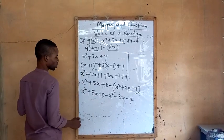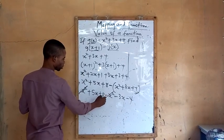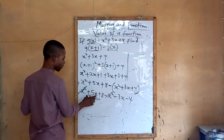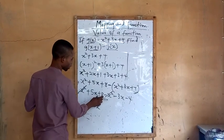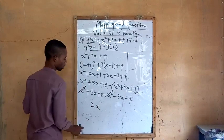So what will I do? The x squared cancels with minus x squared. Plus 5x minus 3x, that's plus 2x. Plus 8 minus 4, that's plus 4.